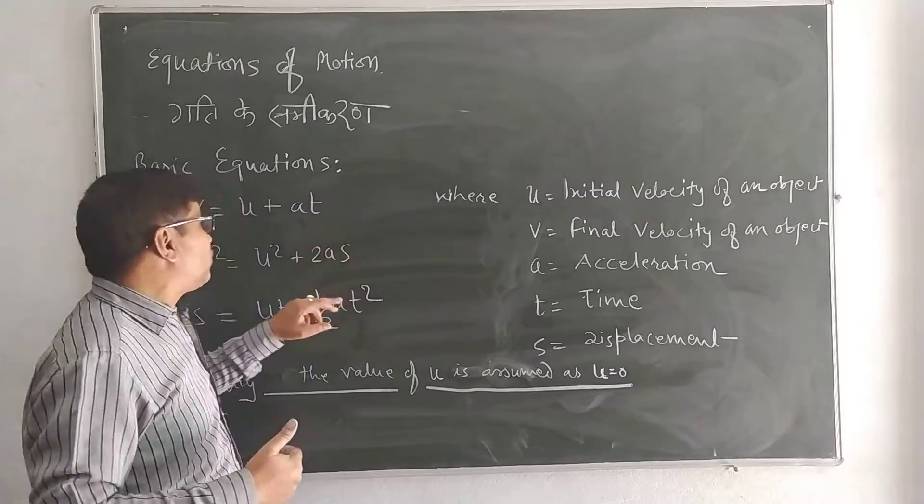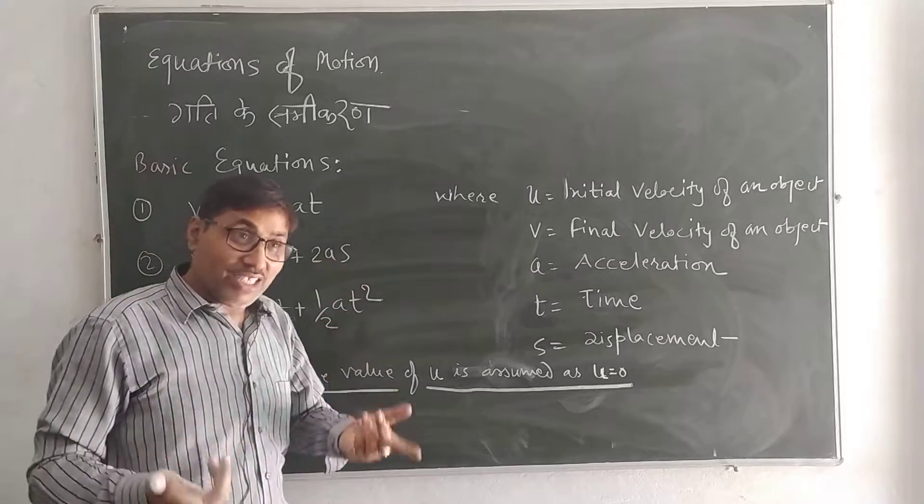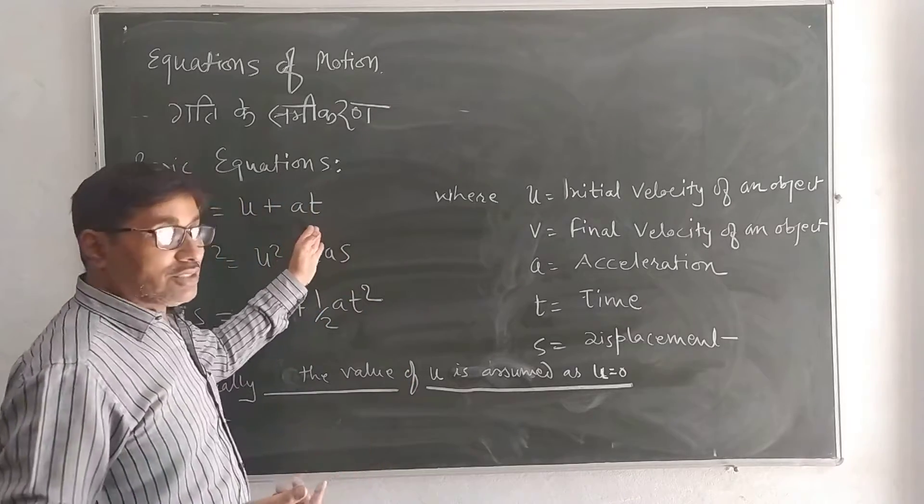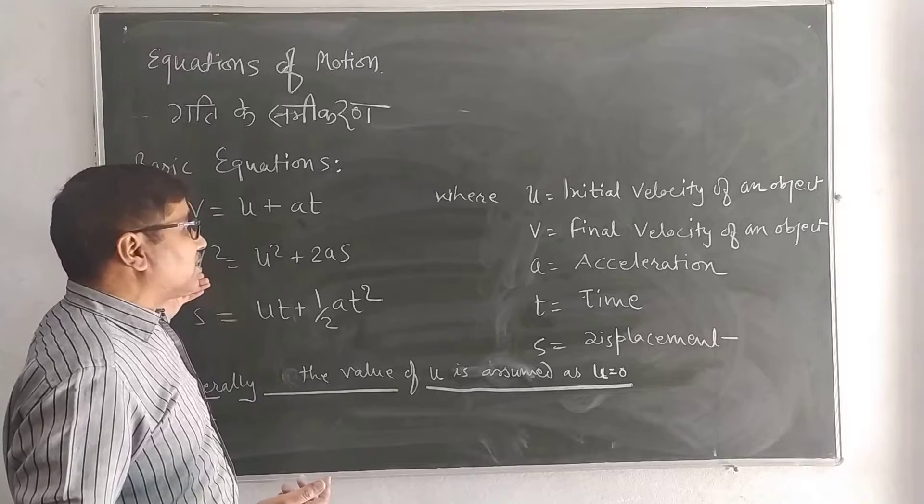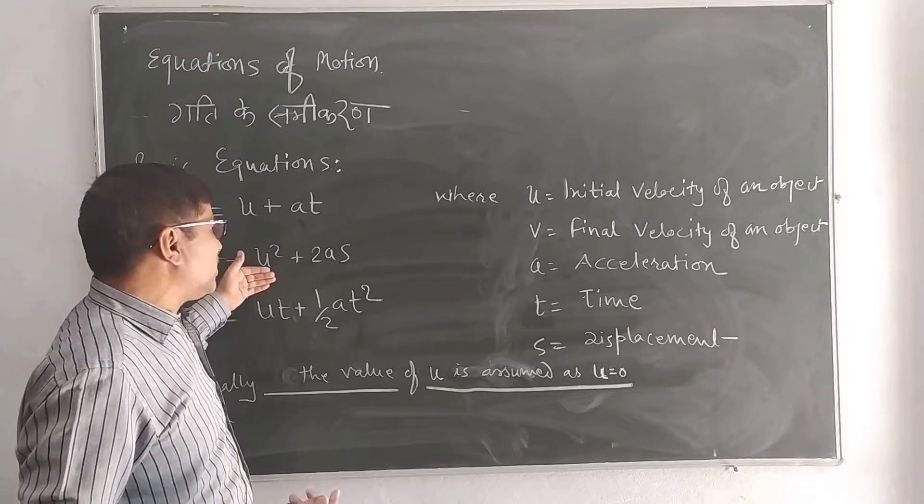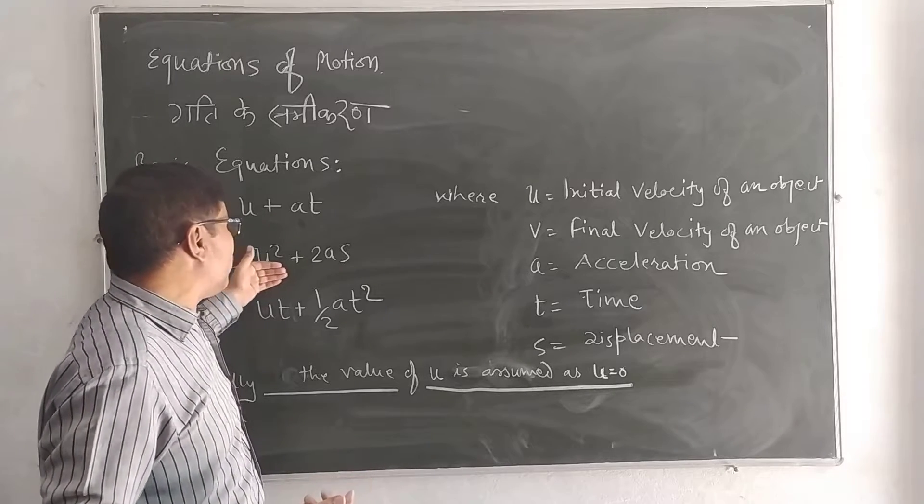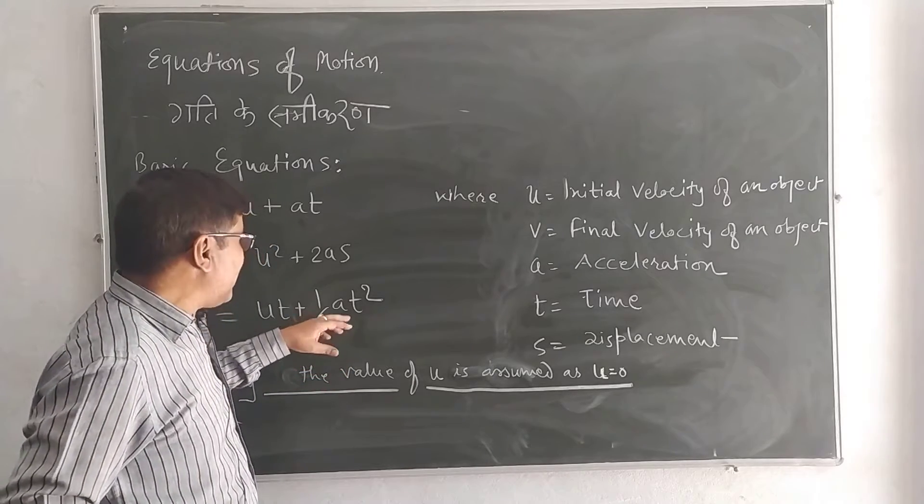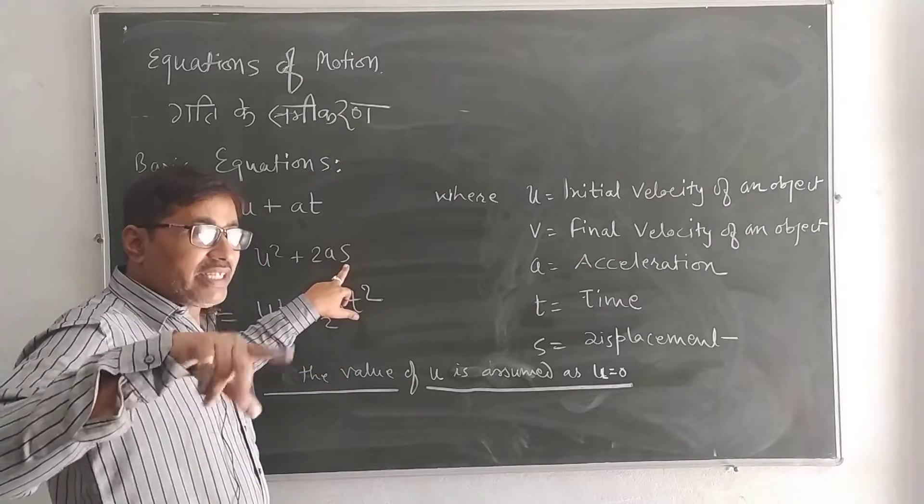The basic equations are: v = u + at, second equation v² = u² + 2as, and s = ut + ½at².